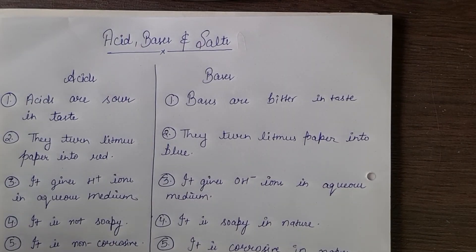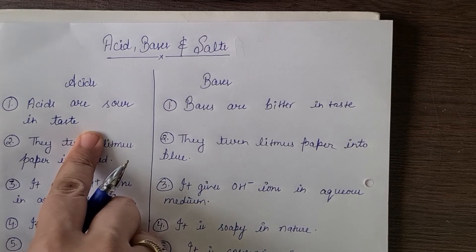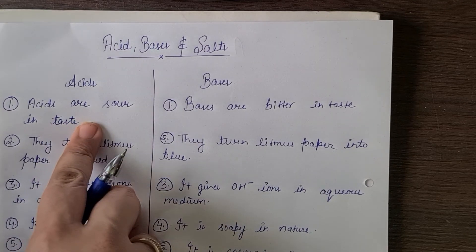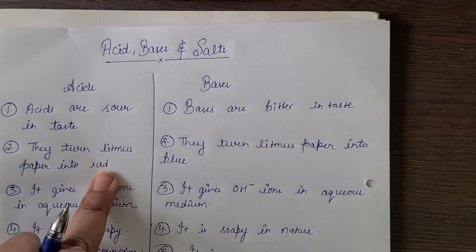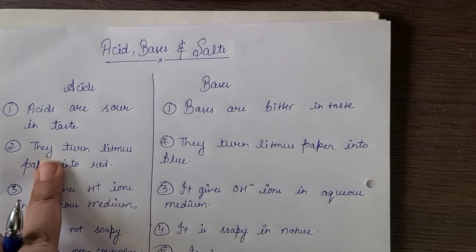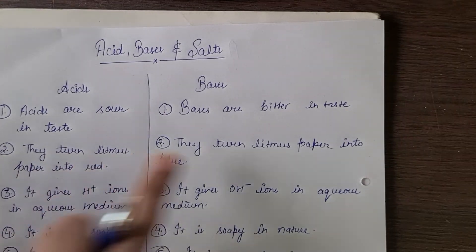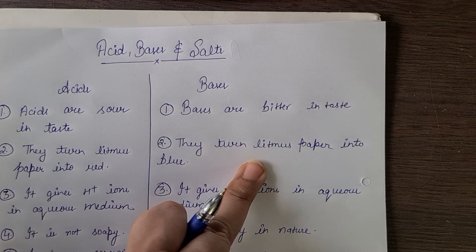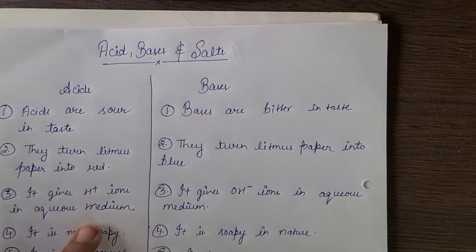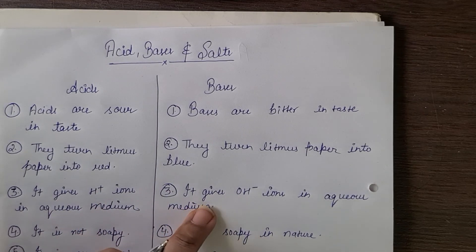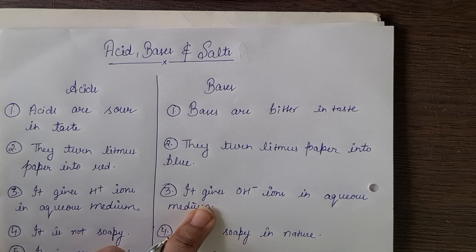To summarize: the first classification is on the basis of taste — acids are sour, bases are bitter. The second is on the basis of litmus paper — acids turn it red, bases turn it blue. The third is on the basis of ions — acids give H positive ions in aqueous medium and bases give OH negative ions in aqueous medium.